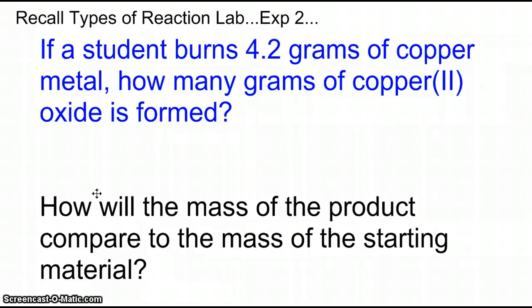Pause for a minute and see if you can do two things. Let's calculate using stoichiometry, the mass of copper oxide formed, and how will that mass of the product compare to the 4.2 grams of copper, even before doing the calculation. Could you predict whether the mass of the product will be the same as, greater than, or less than the copper metal that you began with?